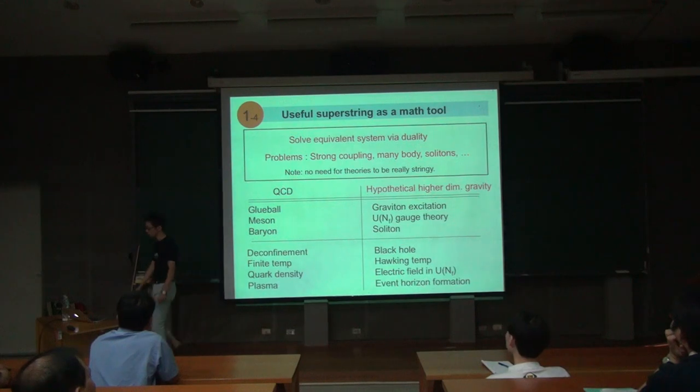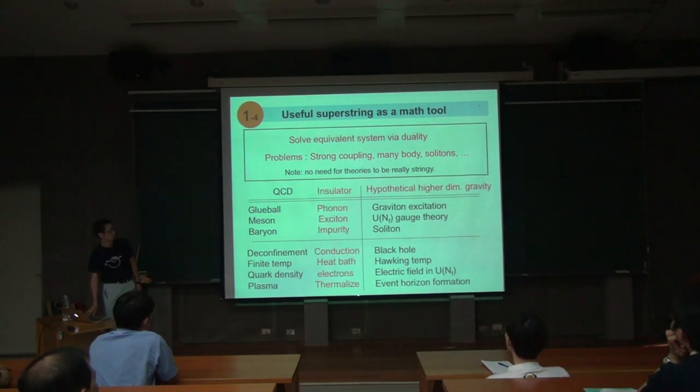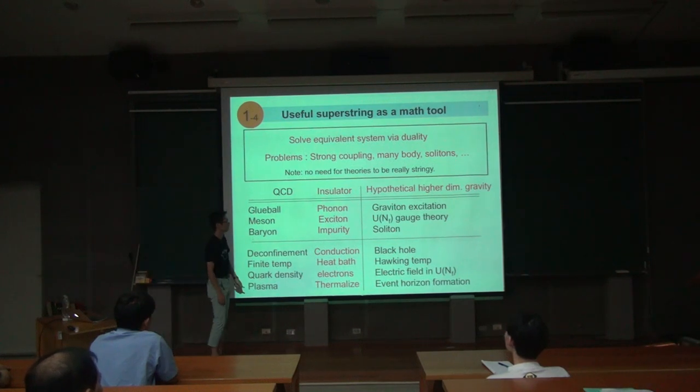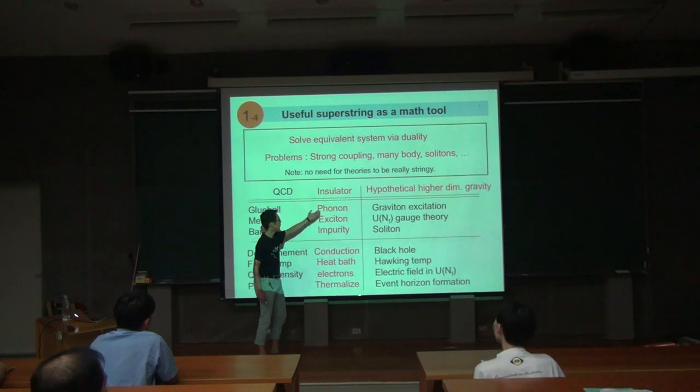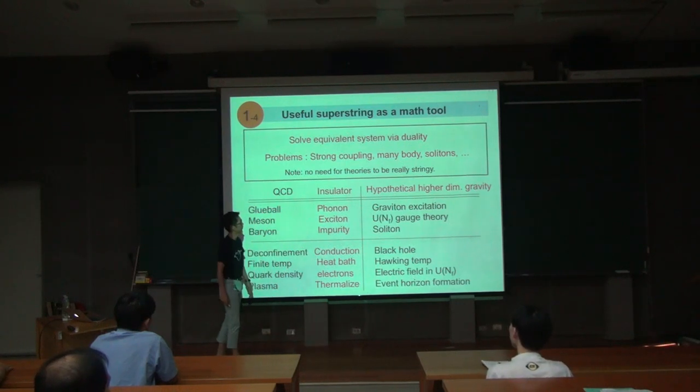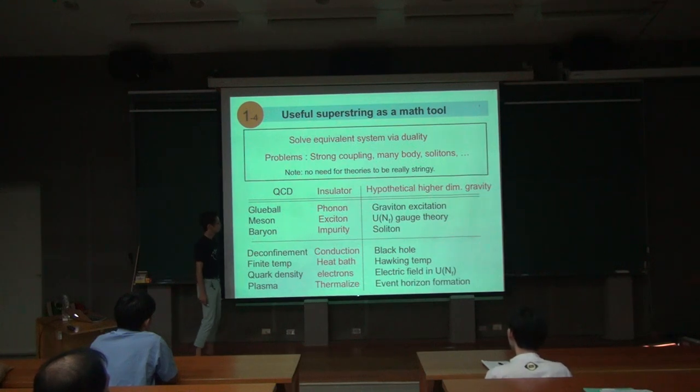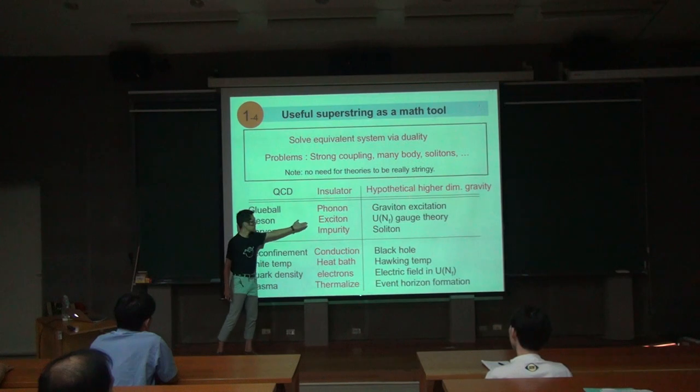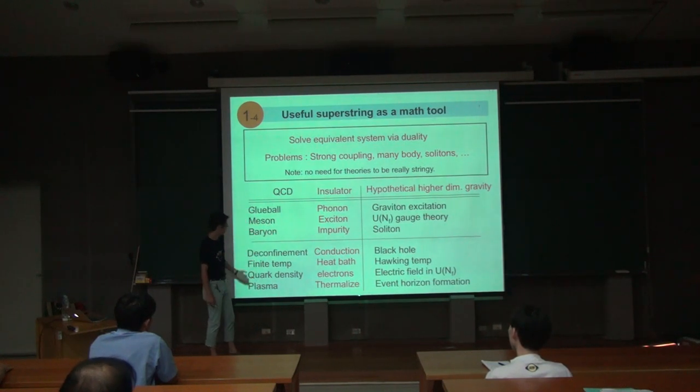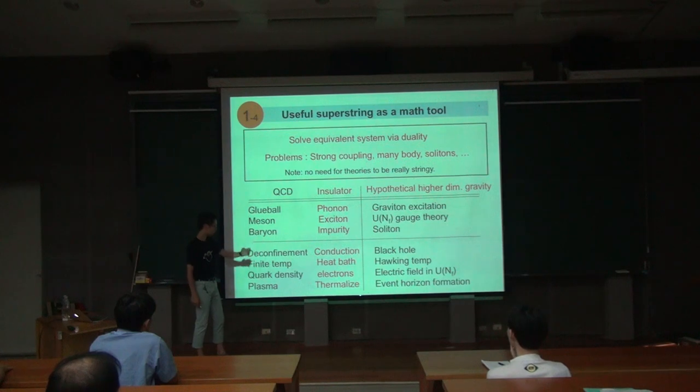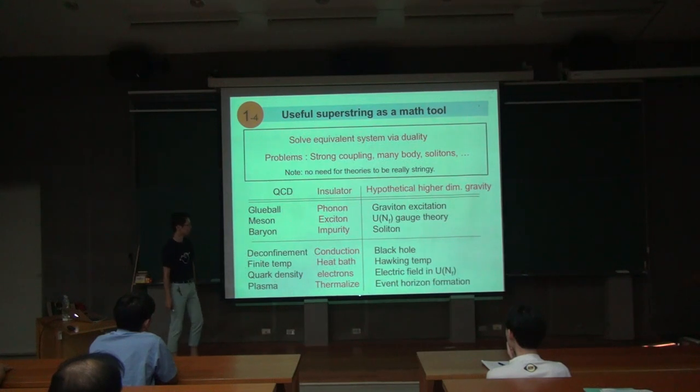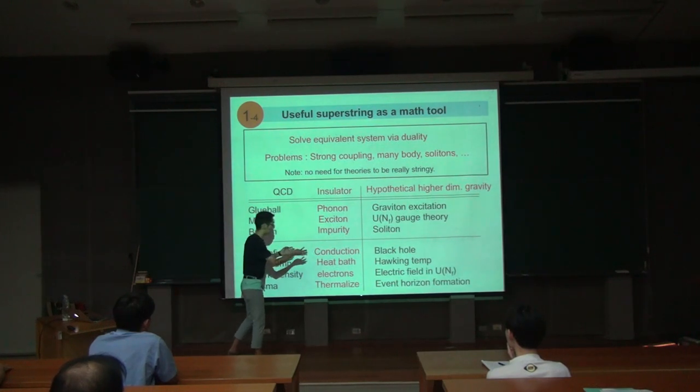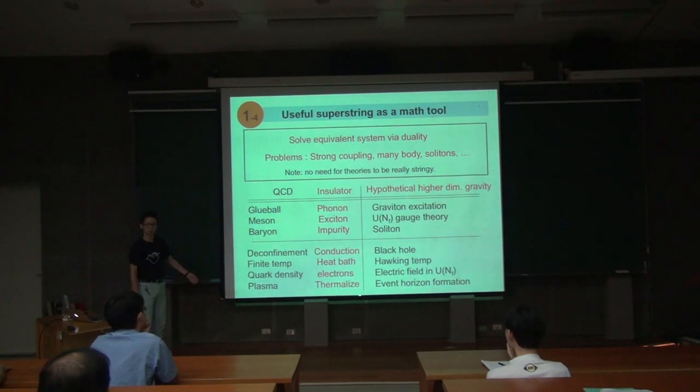So now, if I look back to the condensed matter theory, then there is another dictionary which goes between this QCD hypothetical higher-dimensional gravity and condensed matter. In each layer, for example, the glueball looks like a phonon excitation. Mesons are excitons, the baryons are impurities, the confinement is the insulator phase, and the temperature is the thermal component of the theory. Quark density is electrons, plasma is a metal phase. So in this way, we have three-way dictionary. You can translate each term very easily, once you assume that this super-string conjecture is correct.